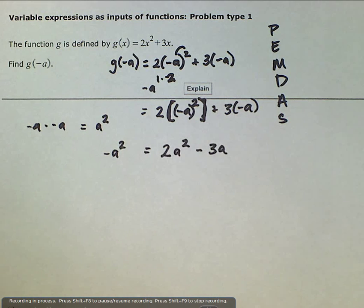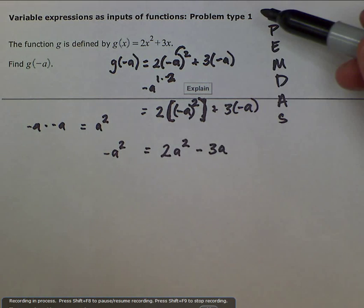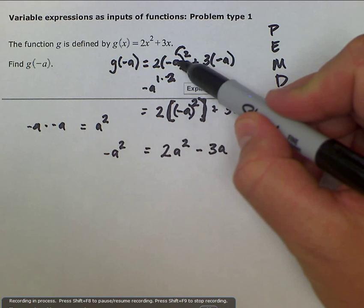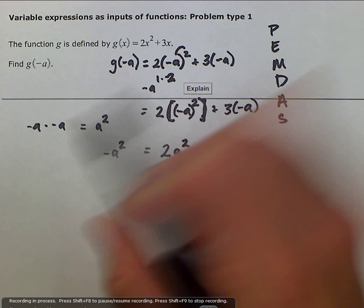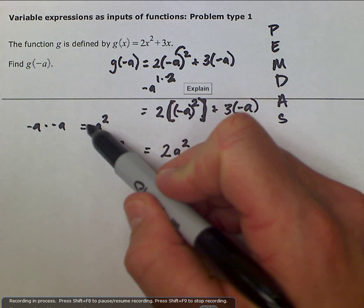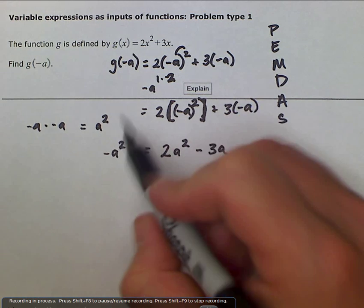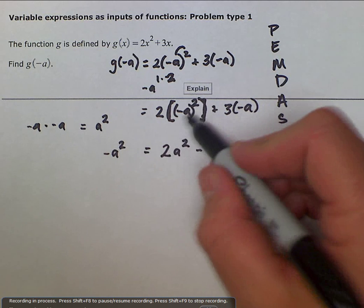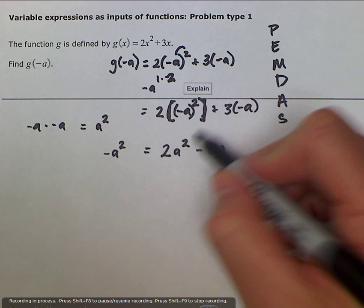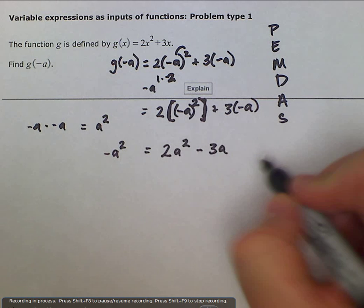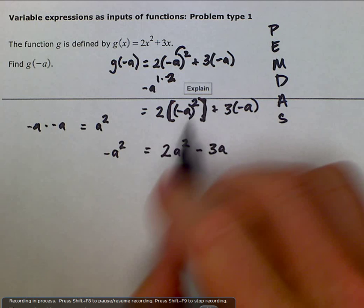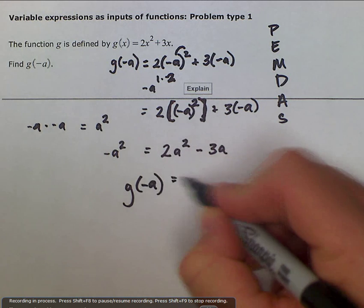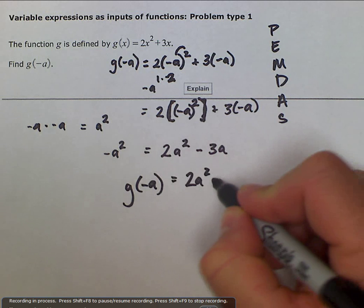So, as kind of a wrapping up here, make sure that you do your exponents first. Negative a squared is negative a times negative a, which is a positive a squared. So you would put that here, 2 times your positive a squared. And then 3 times a negative a is negative 3a. So our final answer is g of negative a is equal to 2a squared minus 3a.